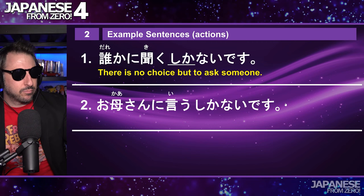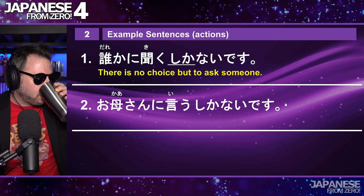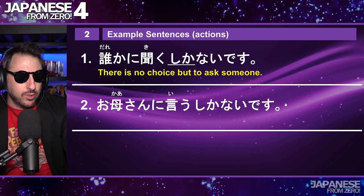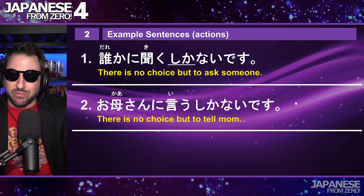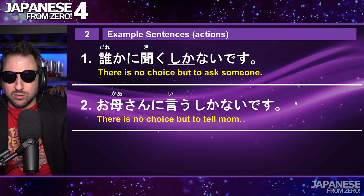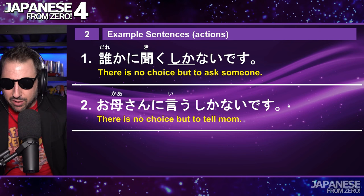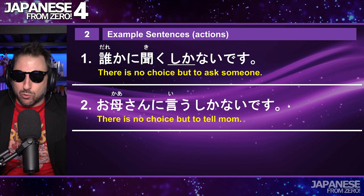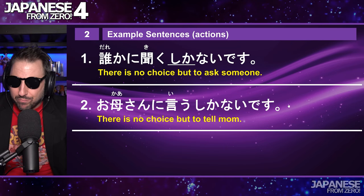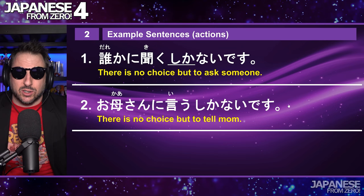Here's another one: お母さんに言うしかないです. Pino gets it right: 'no choice but to tell mom.' There's no choice but to tell mom. We have to tell mom. There's no way around it. It doesn't strictly mean 'we have to tell mom,' but if you were doing subtitle translation and someone said お母さんに言うしかないです, 'we have to tell mom' would be an excellent translation because that's really what you're trying to say.